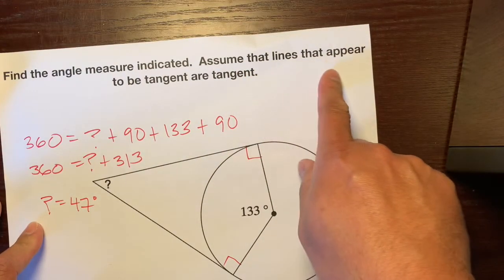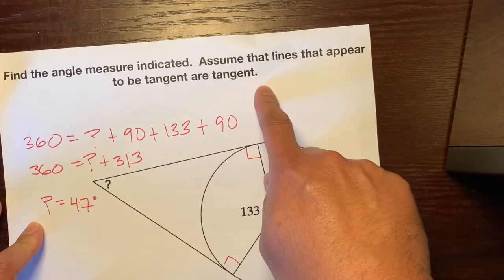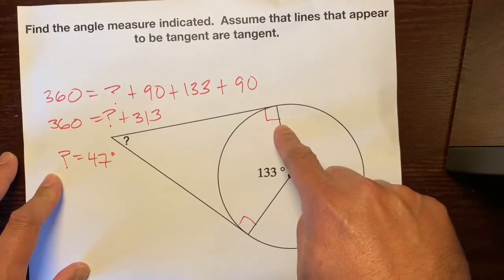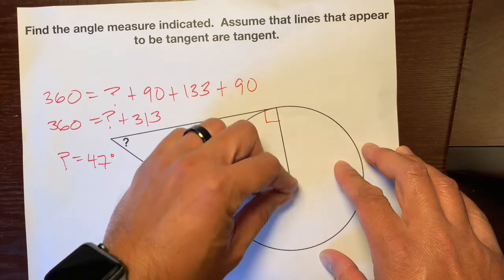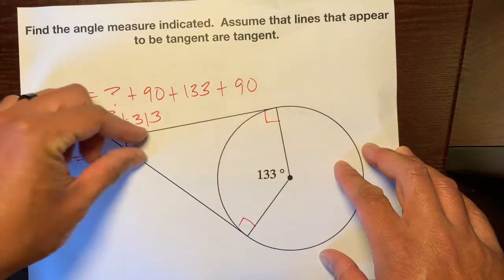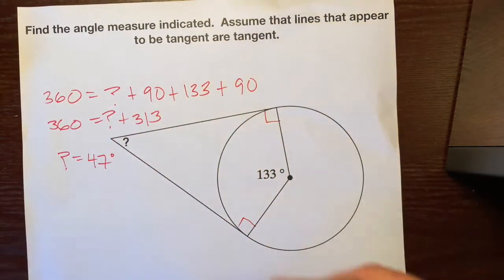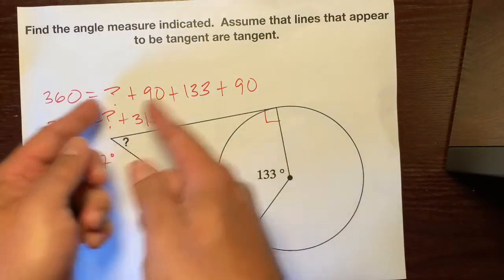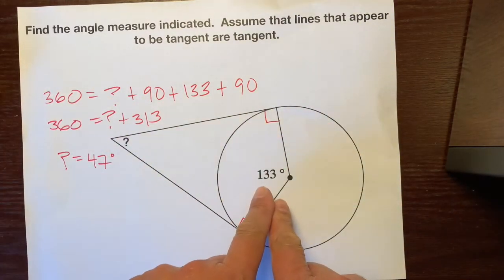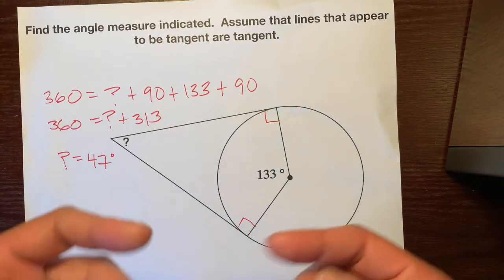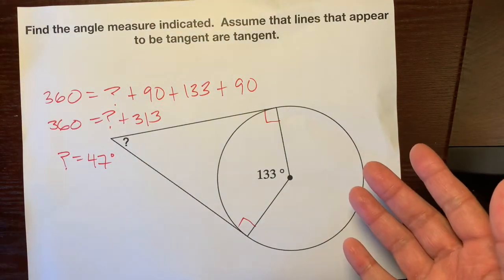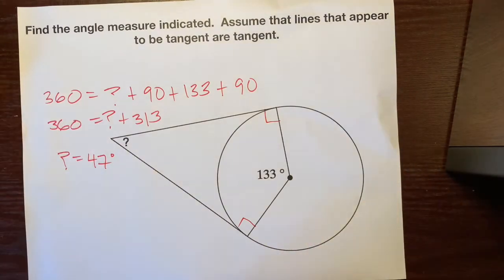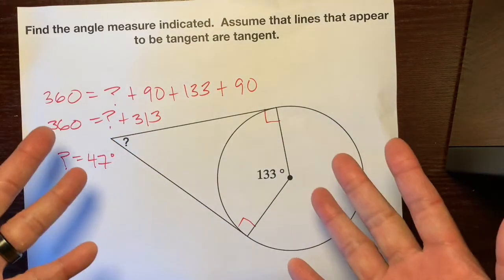Use the hint: assume that lines that appear to be tangent are tangent. So this is 90, this is 90 degrees, this is 133 degrees. Use the quadrilateral sum theorem. That means that all four angles add up to 360. And do this. Don't just divide that by 2 because in most cases you will get it wrong. And I want you guys to get it right in all cases. So do it this way. Okay, hope that helps.